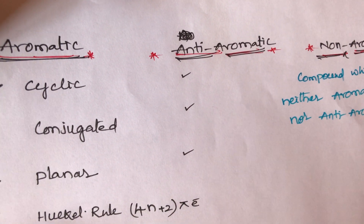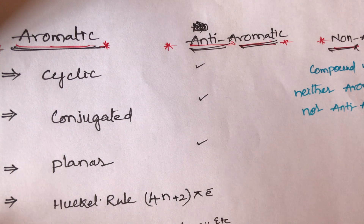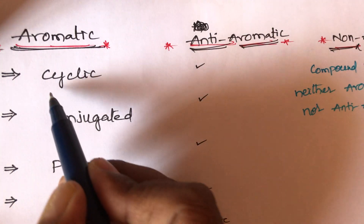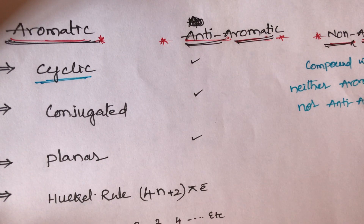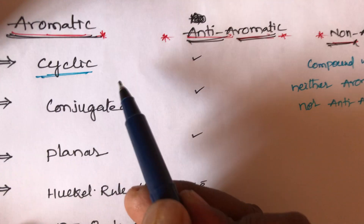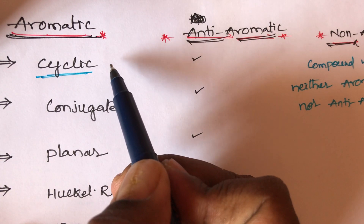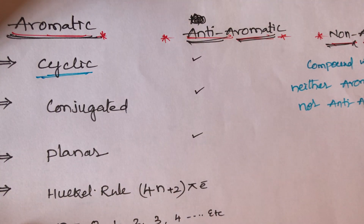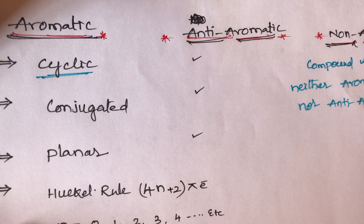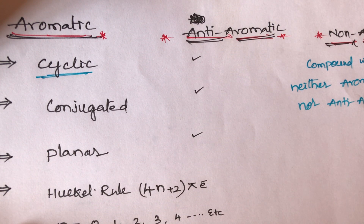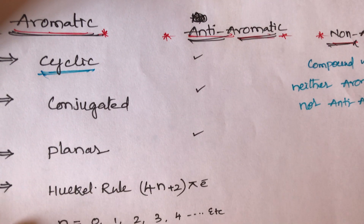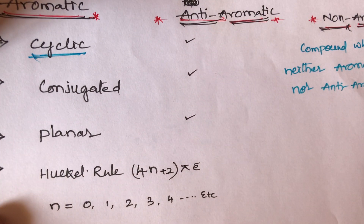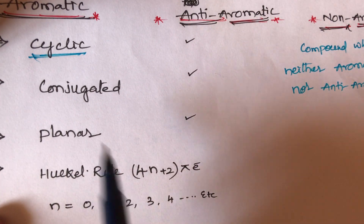What are the aromatic conditions? The first condition is that the compound should contain a cyclic structure — ring structure — such as cyclopropane, cyclopentene, cyclobutene, and similar rings.